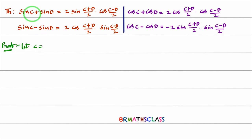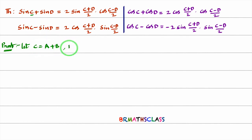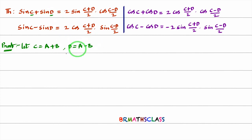First, I will take C — the angle C equal to A plus B. We can write like this. For example, if C is 60 degrees, C can be written as 15 degrees plus 45 degrees, or 30 degrees plus 30 degrees. Consider C as A plus B and take D as A minus B.